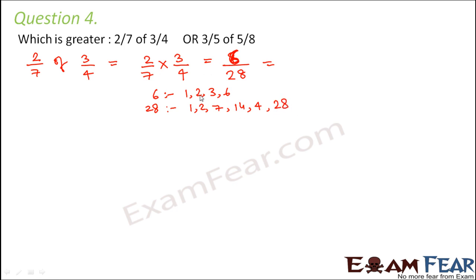So which is the highest common factor? The highest common factor here is 2. So therefore we divide the numerator and the denominator by 2. 6 divided by 2 is 3 and 28 divided by 2 is 14. So 2 by 7 of 3 by 4 is 3 by 14.